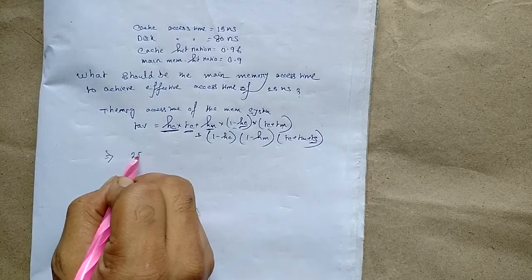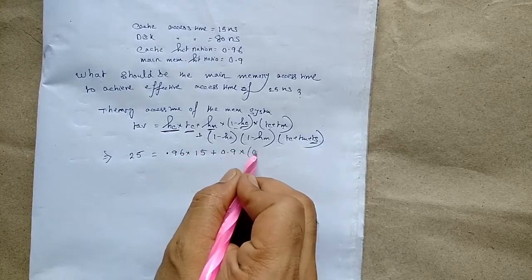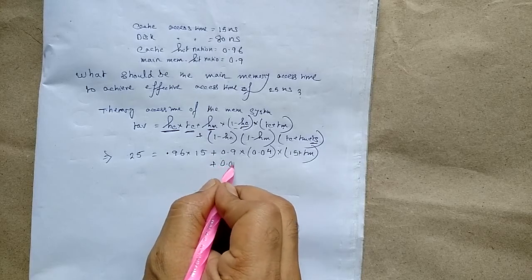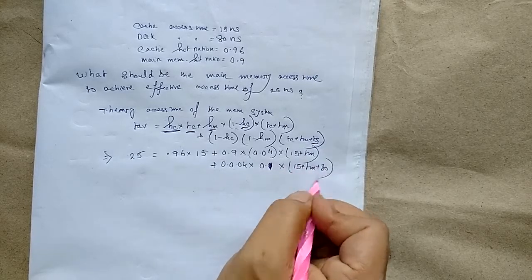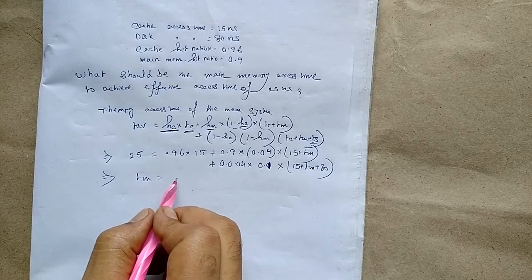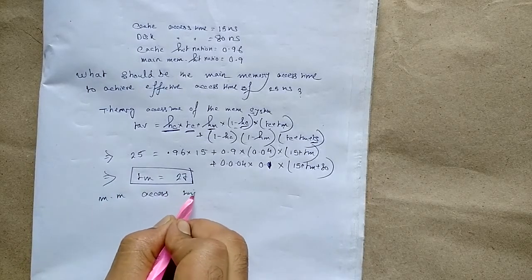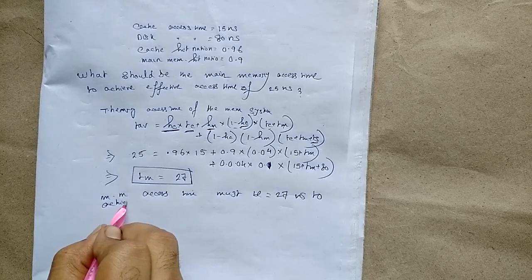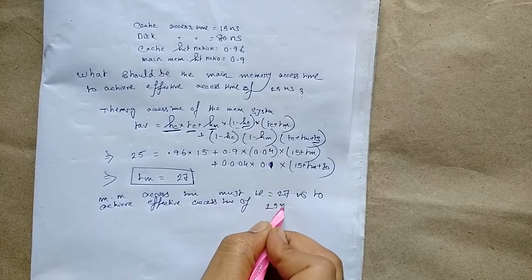Now we will put in the values. T_average = 25. So: 0.96 × 15 + 0.9 × 0.04 × (15 + Tm) + 0.04 × 0.1 × (15 + Tm + 80). Simplifying this equation, we get Tm = 27. So the main memory access time must be 27 nanoseconds to achieve an effective access time of 25 nanoseconds.